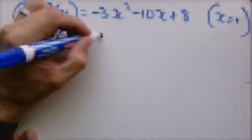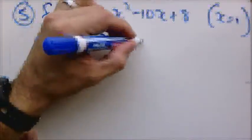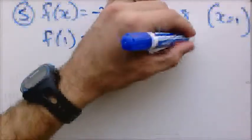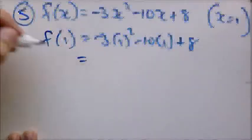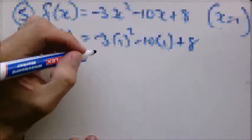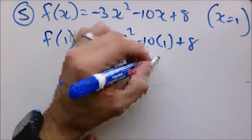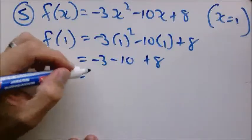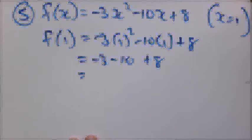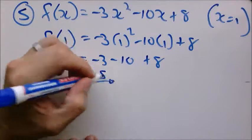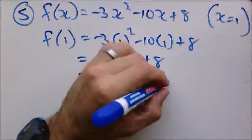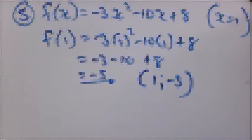So you substitute 1 into your equation. So that you can calculate the rest of the coordinate. So this becomes negative 3 minus 10 plus 8. So this gives us the full coordinates now. 1 and negative 5.